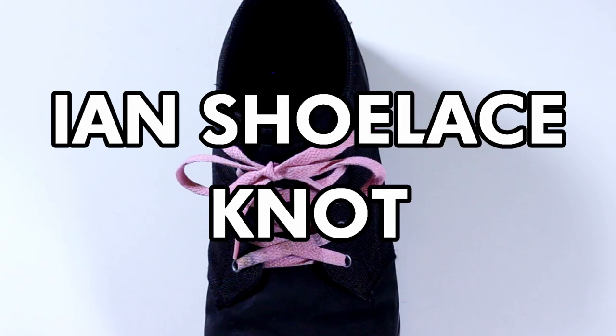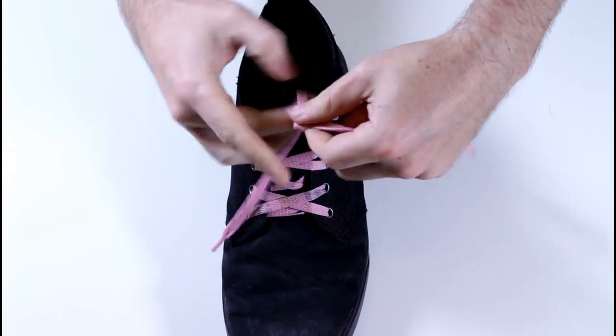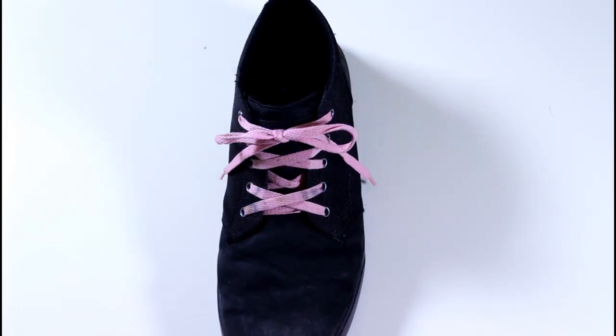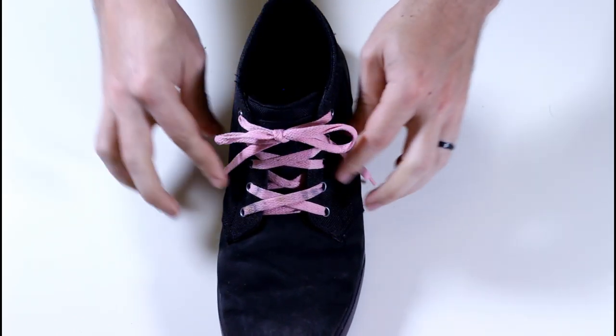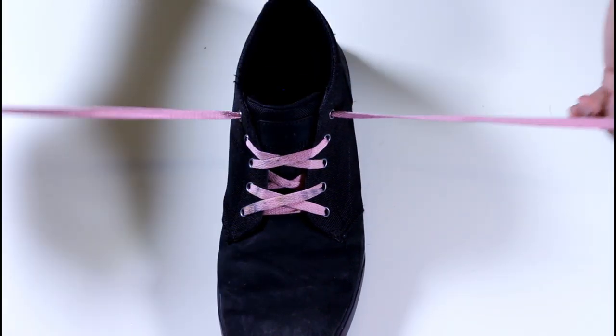The Ian shoelace knot. You probably already know how to tie your shoes, but Ian Figgins quick tie bow is faster and less likely to come untied than the bunny ears that you learned as a kid. It's also great for tying apron strings behind your back. Start with your basic overhand knot, the same way that you always do.